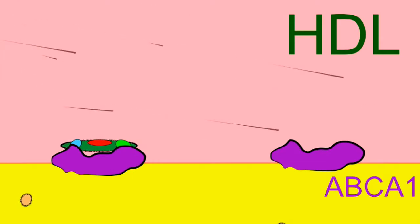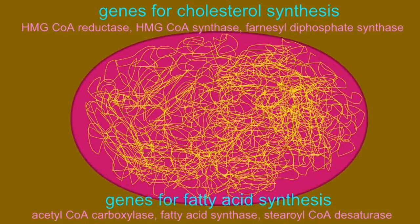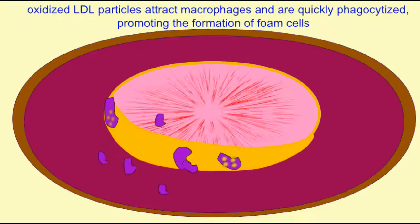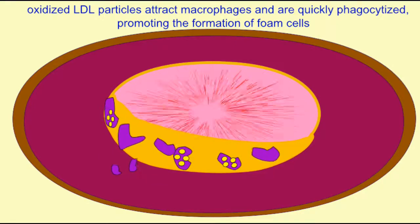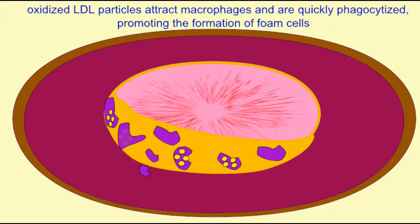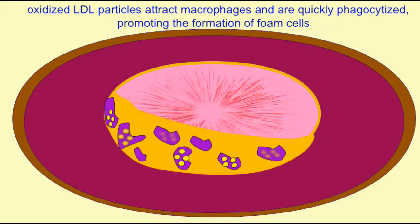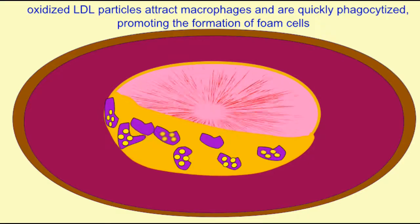Other genes encode proteins involved in fatty acid or cholesterol synthesis, or in the migration of monocytes to the blood vessel wall, where they become macrophages and potentially foam cells.